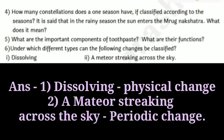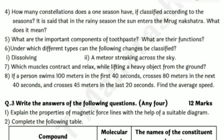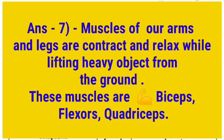Question number 7: which muscles contract and relax while lifting a heavy object from the ground? These muscles are biceps, flexor, and quadriceps. In this unit test, you have to write many long answer type questions, so read all content before solving this question paper.